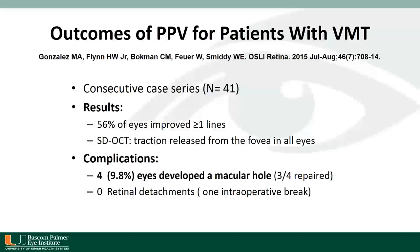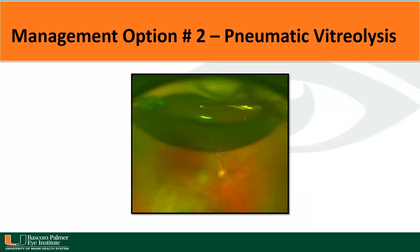What about outcomes with vitrectomy for vitreomacular traction from Bascom Palmer? We reported a series of 41 patients in 2015. 56% of eyes improved by one or more lines, and the traction was released in all cases. However, there were complications: four patients, or 9.8%, developed a macular hole, and three of the four underwent additional surgery with successful closure of the macular hole.